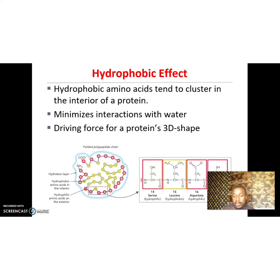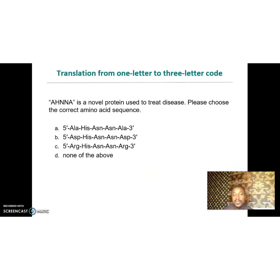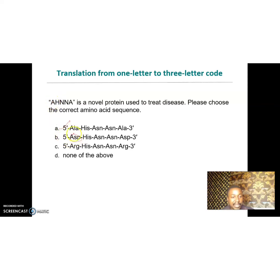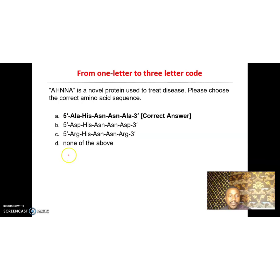For a practice question translating single-letter codes A, H, N, N, A: A is alanine, H is histidine, and N is asparagine. Note that A is alanine, not aspartate — aspartate has a different code. So the correct answer is alanine, histidine, asparagine, asparagine, alanine, making option A correct.